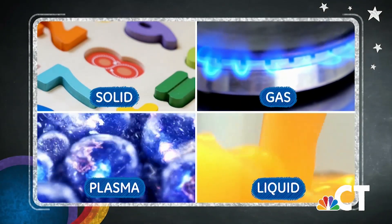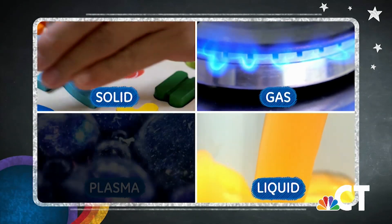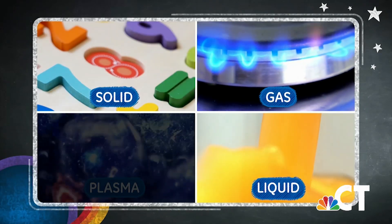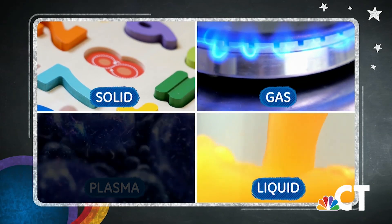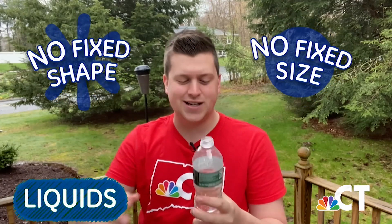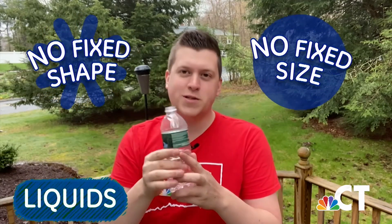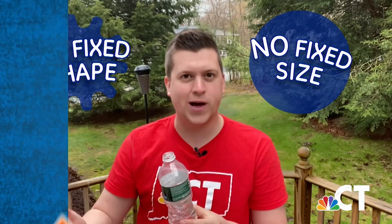We have four types of matter and we will talk about three of them: solids, liquids, and also gas. Inside here in this bubble maker, this is what we call a liquid. You can also see liquid in a water bottle. It doesn't have a fixed shape, it doesn't have a fixed size, and it forms around whatever container it's in. That's why it's called a liquid.